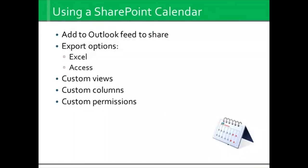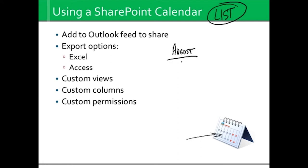A SharePoint calendar is also known as a list, and you're going to see me write the word 'list' down perhaps more than you care to see it. A calendar is simply a list of events. If we choose a display format that looks like a traditional calendar, then yes, it looks very much like a calendar we'd all recognize. But if I change the format of how that calendar shows, it could actually be a list — like August 1st, August 2nd, August 3rd — so it could be a list of days.